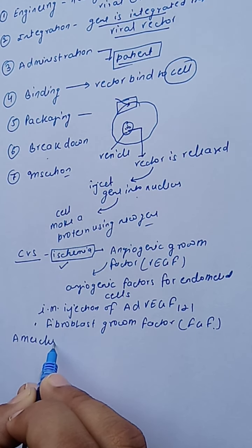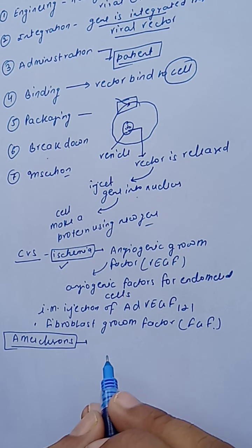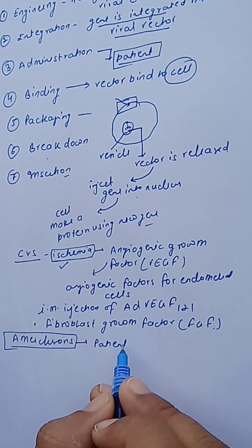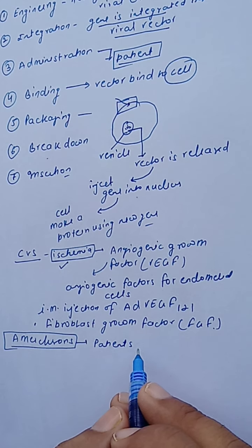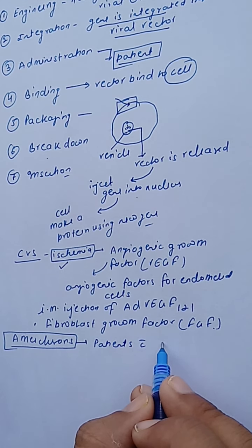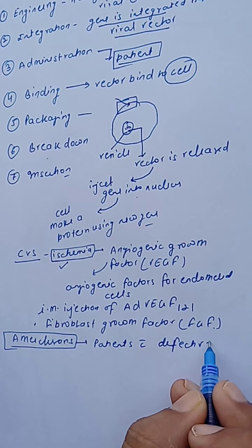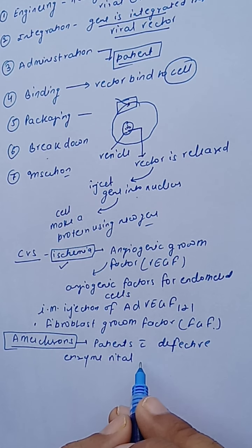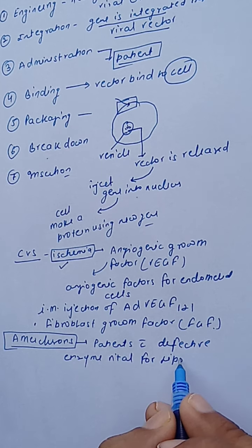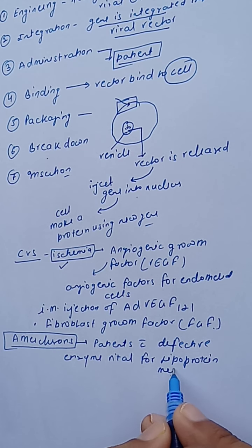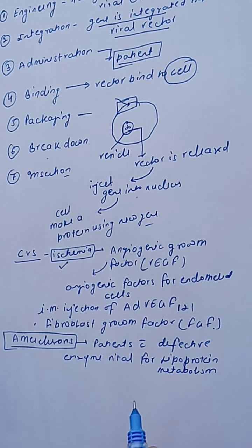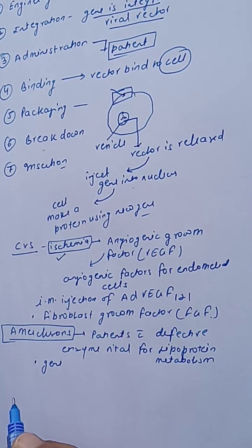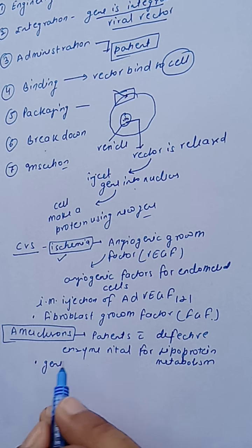For atherosclerosis, the etiology involves both environmental and genetic factors. Patients with defective enzymes that are vital for lipoprotein metabolism cannot metabolize lipoproteins properly — their lipid profile increases, deposits in arteries, and leads to heart disease. Gene therapy can help by transferring DNA that produces the correct enzymes to replace the defective ones required for lipoprotein metabolism.